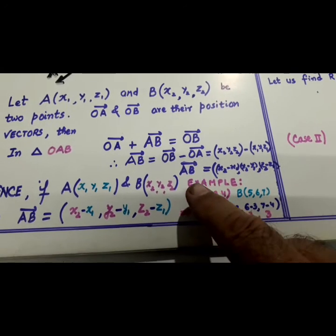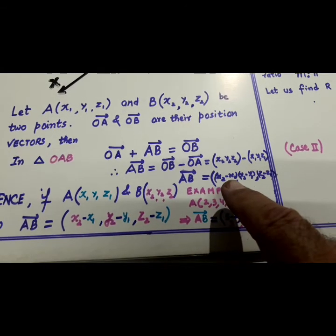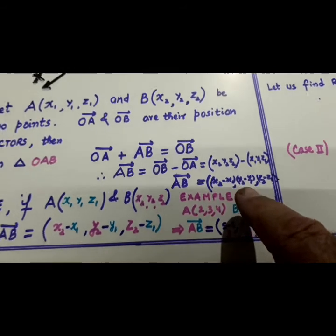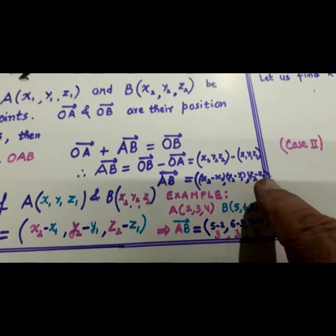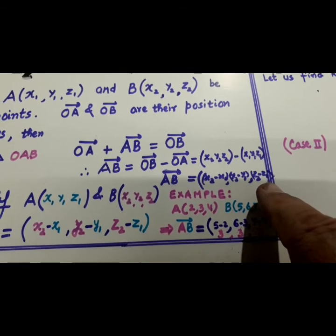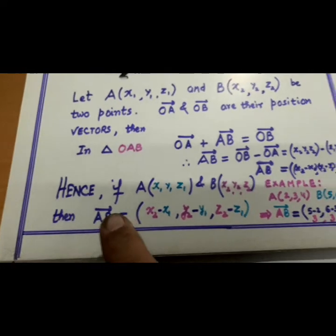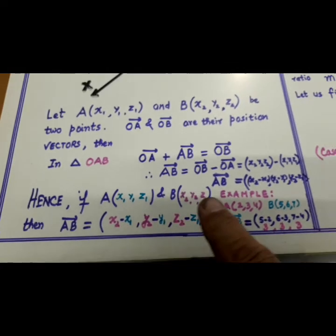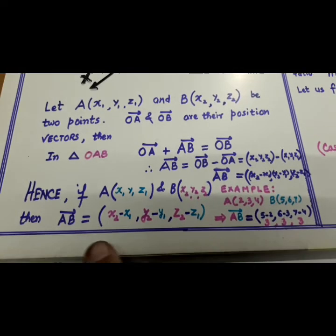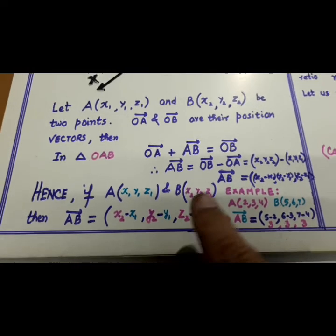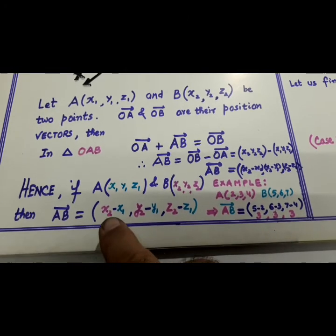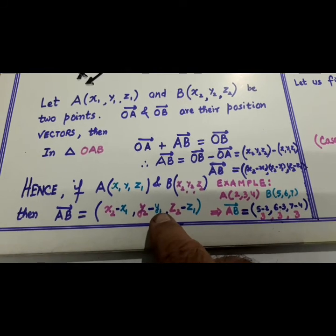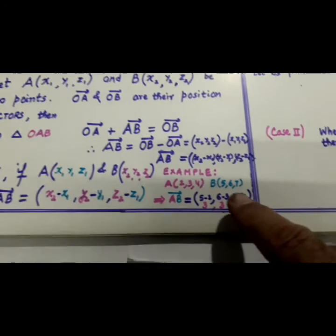Subtract. AB will become X2 minus X1, Y2 minus Y1, Z2 minus Z1. So, if A and B are two points, then AB is always B minus A. B minus A. So, X2 minus X1, Y2 minus Y1, Z2 minus Z1.